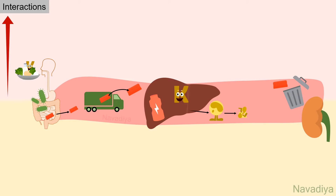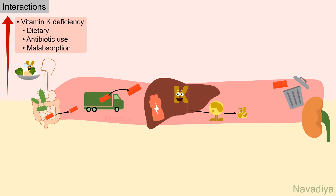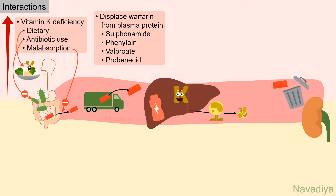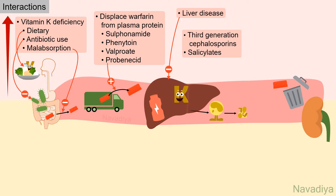Now let's look at factors that increase the effect of warfarin. First, vitamin K deficiency — due to reduced dietary intake, antibiotic use which destroys vitamin K synthesizing bacteria, or malabsorption from the intestine. Second, drugs like sulfonamide, phenytoin, valproate, and probenecid displace warfarin from plasma proteins, so more free warfarin is available. Third, in liver disease, capacity to synthesize clotting factors is reduced, increasing warfarin effect. Third generation cephalosporins and salicylates also inhibit vitamin K activation similar to warfarin, potentiating its effect.